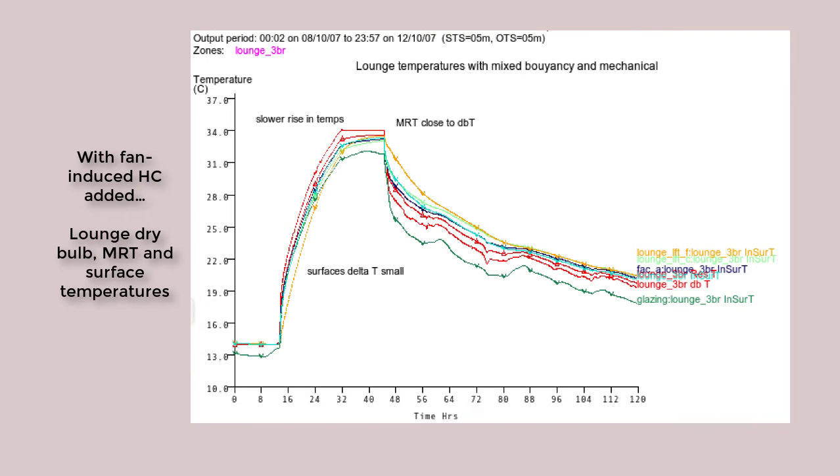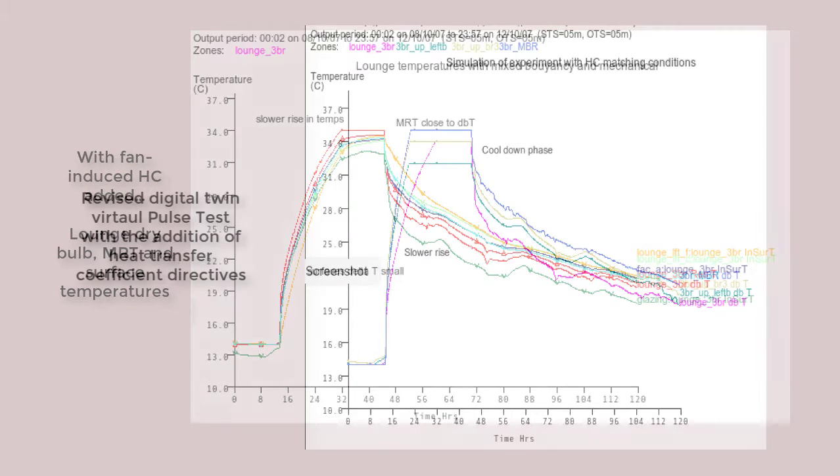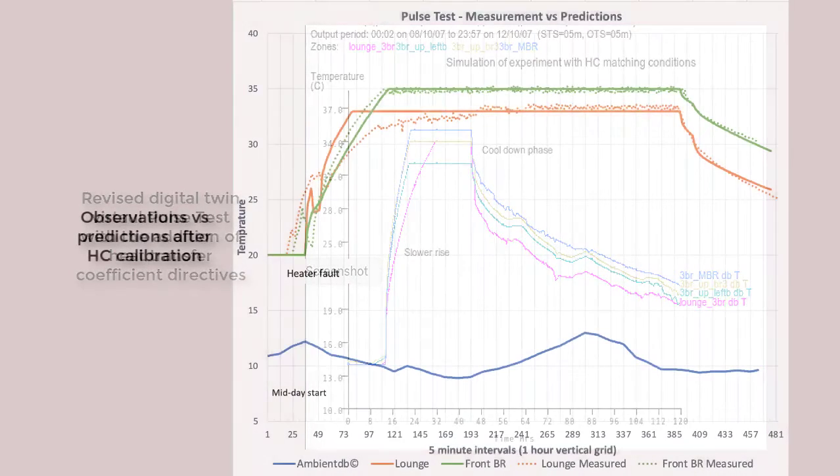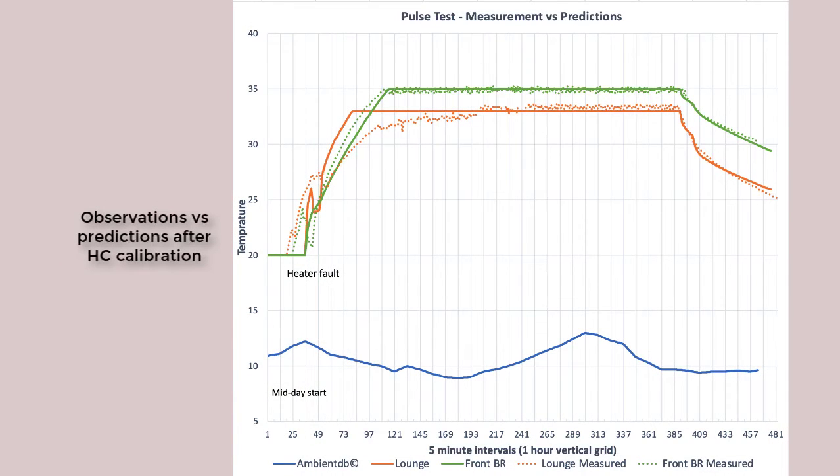The corrective action was to impose heat transfer rates based on the observed air velocity when the fans were operating. So in an extreme case, getting the heat transfer regime aligned with conditions in the room is critical to improving the predictions of the digital twin.